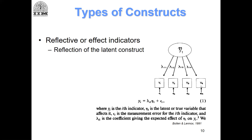Why do we call these reflective or effect indicators? Because the arrows are emerging from the oval and going to the squares. That means these items are actually capturing the reflection of the latent construct NITA1 — they are an image of it. You can also say there is a common source for all four items, which is NITA1, the latent construct.